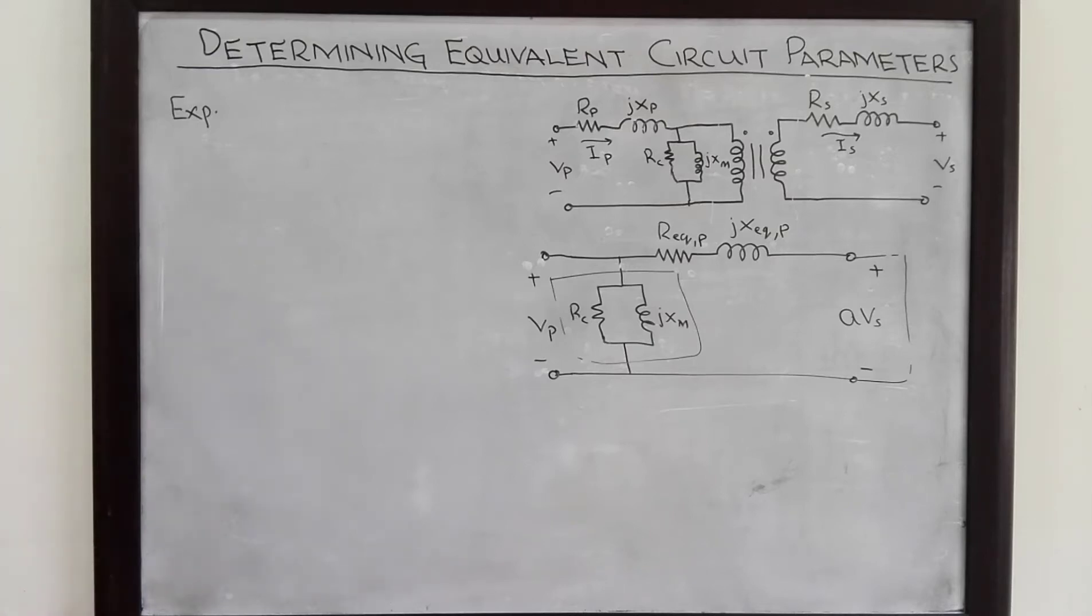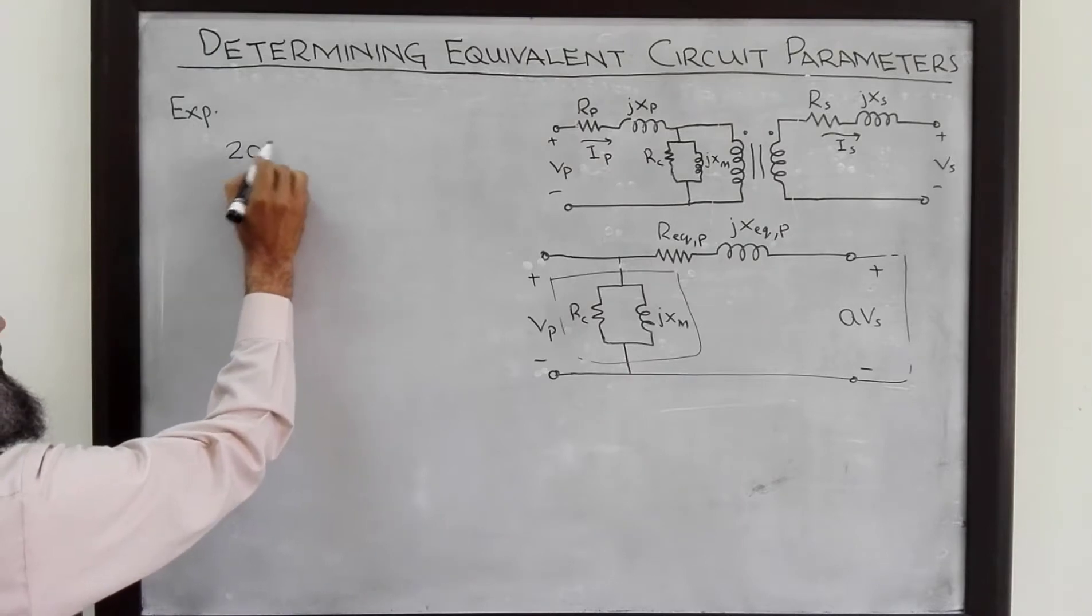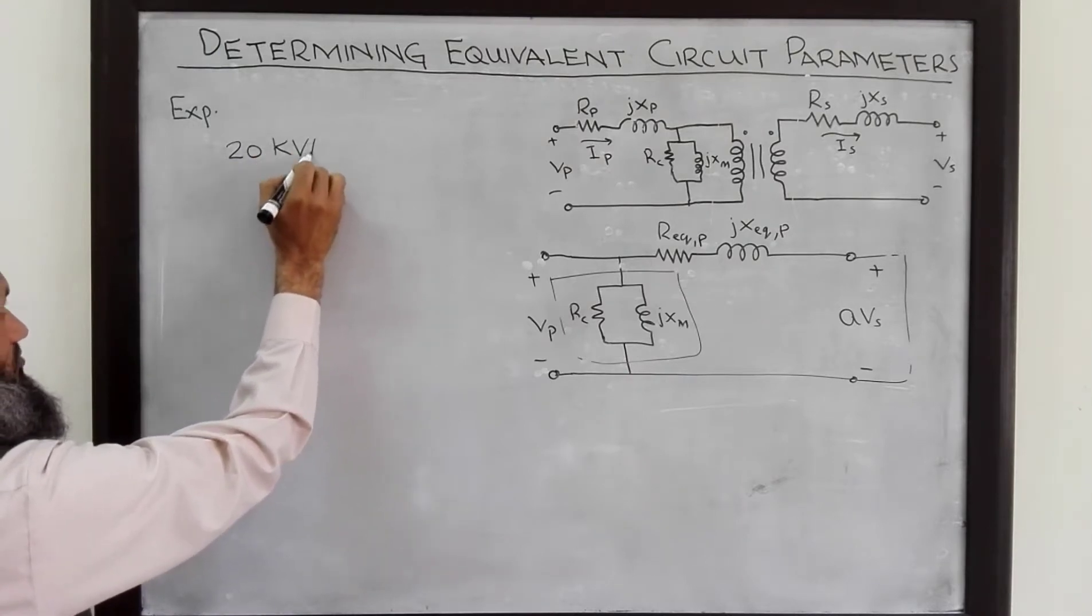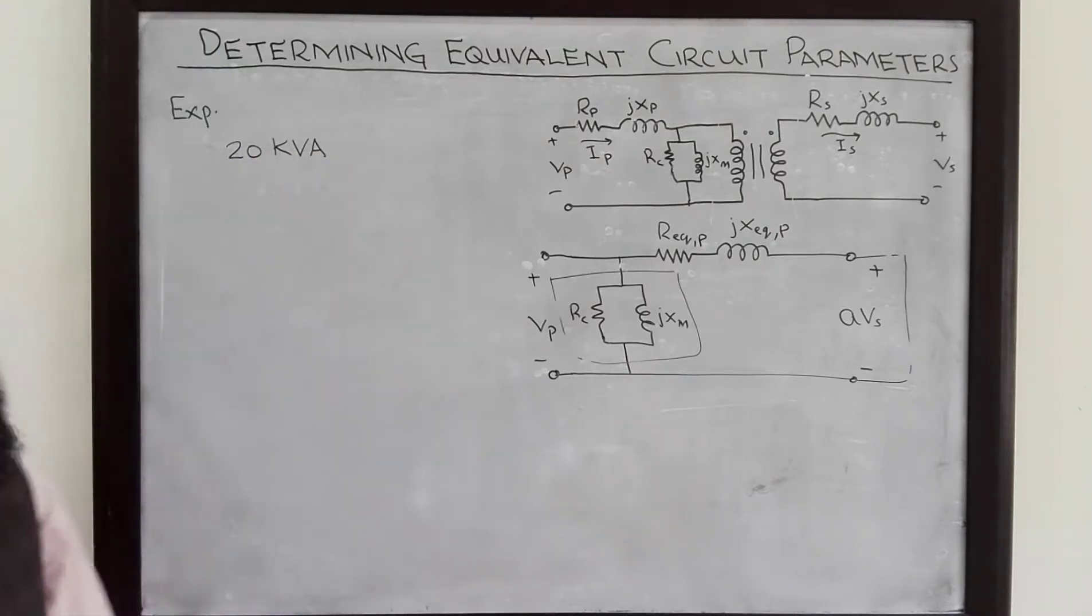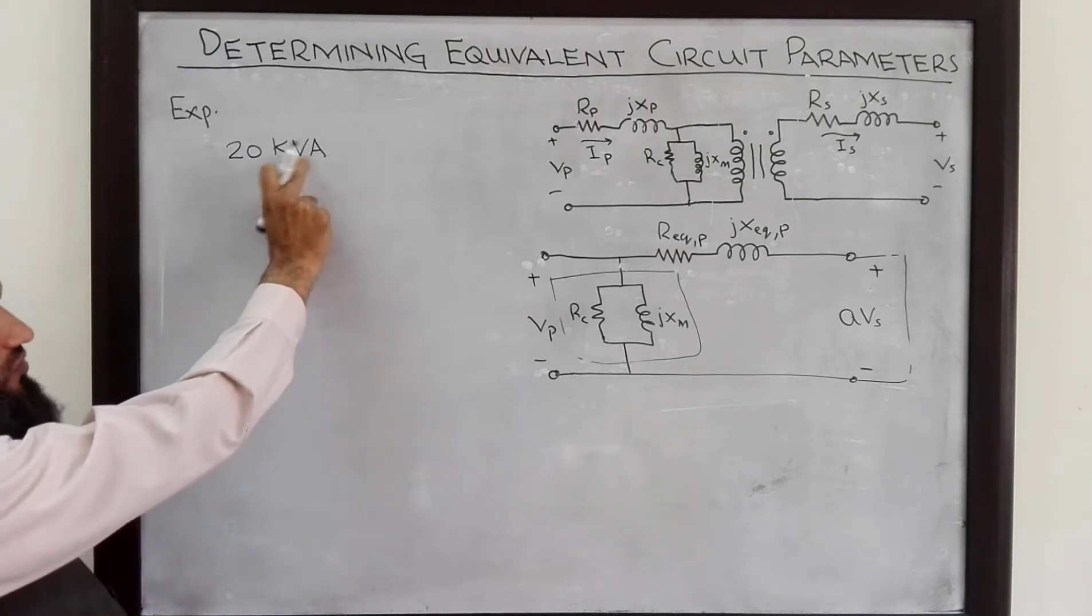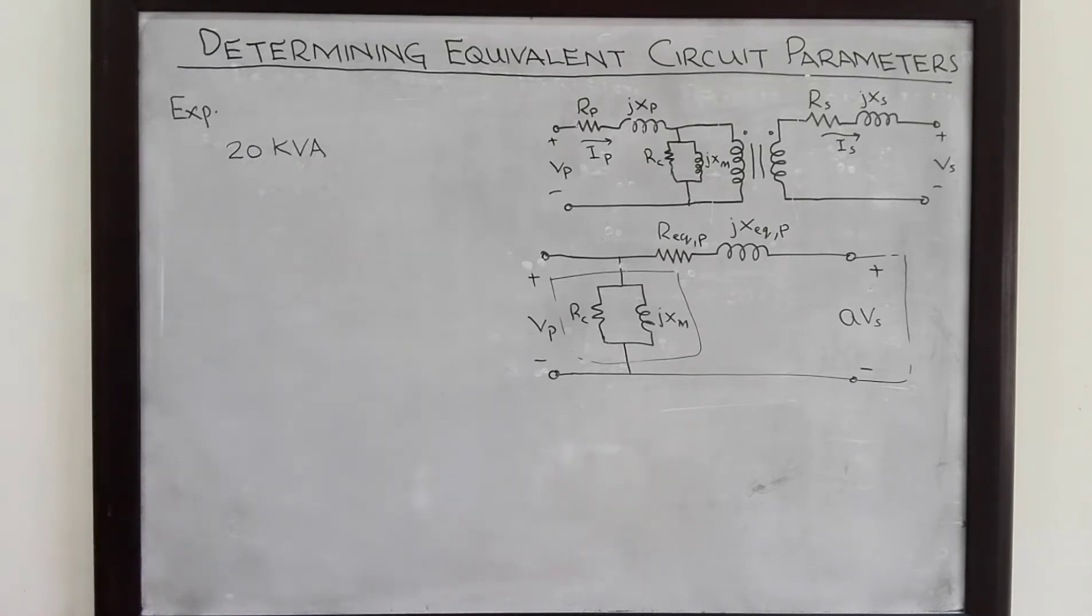We have a transformer. The rating of transformer is 20 kilovolt ampere. Electrical machines are always rated in volt amperes. These are not rated in watts.